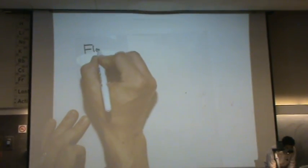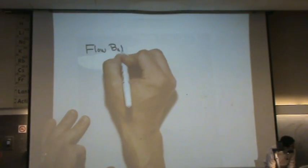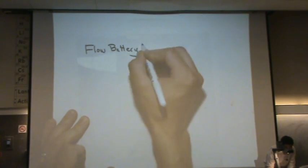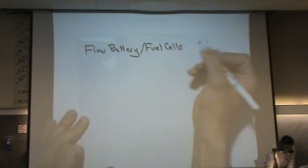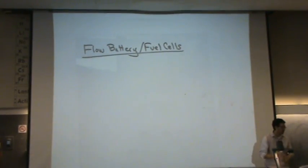The third type, I know this is getting exciting, is called the flow battery or fuel cells. So this is the next category: there's primary cell, secondary cell, and fuel cell or flow battery.